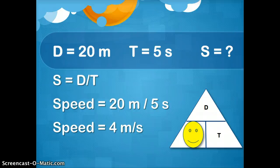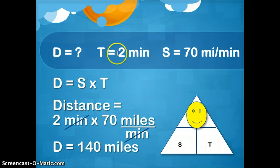Another practice problem. Time is 2 minutes. Speed is 70 miles per minute. What is the distance? Distance equals speed times time. You multiply 2 times 70. You get 140 miles because miles is up here.